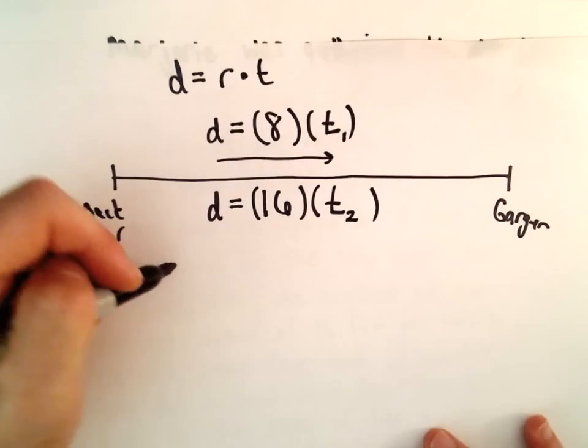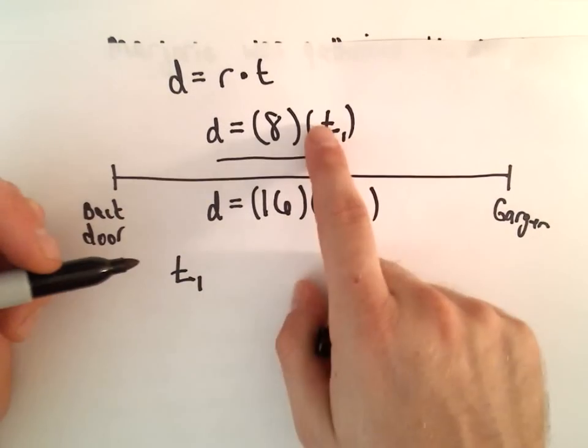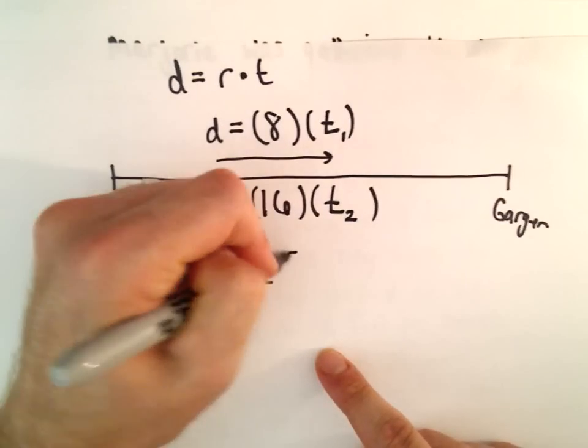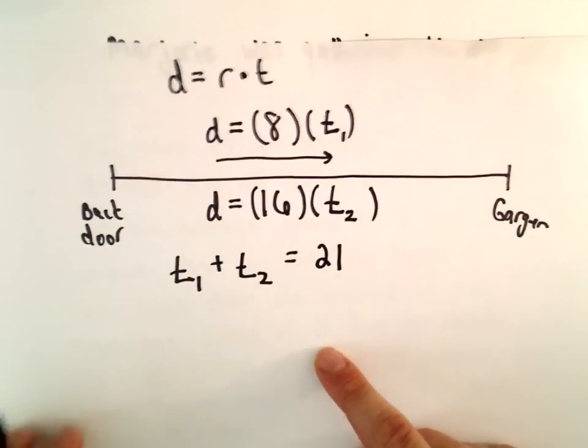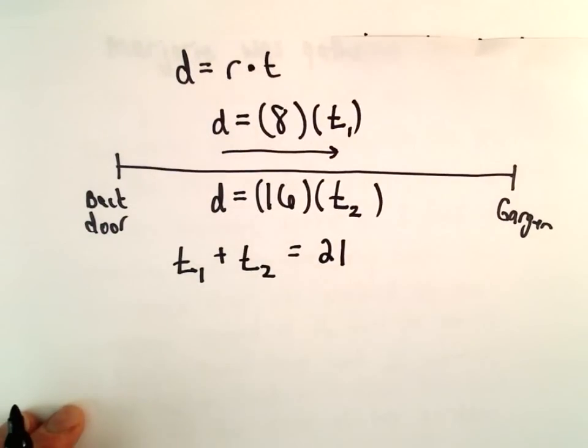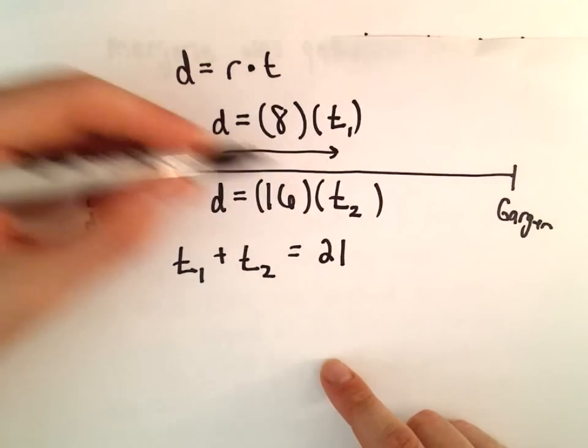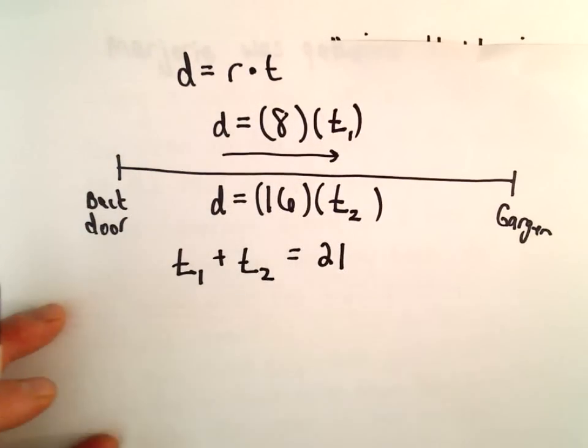Well, what do we know? We know that the time she took walking out plus the time she took walking back took 21 minutes total. So what we're going to do is we're going to take our equations, and we're going to solve for T1 and T2 and plug those into here.